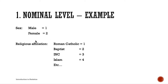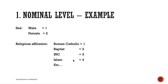Assigning the number 2 to female does not imply that females are better than males — these numbers are simply for coding and classification. Similarly, Islam being number 4 doesn't mean it has the highest value. These numbers cannot be arithmetically manipulated; for example, you cannot calculate an average sex or average religious affiliation.